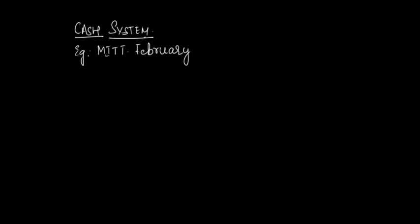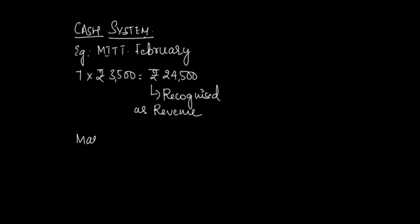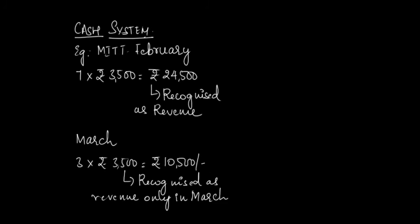Continuing our example, in case of cash system, MIIT center would recognize Rs. 24,000 as fees received in February and remaining Rs. 10,500 as fees received in March. It wouldn't have created any asset for the month of February.